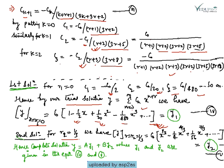We label the first solution at r₁ = 0 as equation four, and the second at r₂ = 1/3 as equation five. The final complete solution will be y = A·y₁ + B·y₂, where y₁ and y₂ are the two independent solutions obtained.